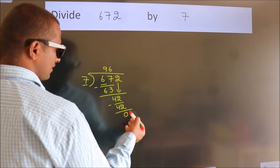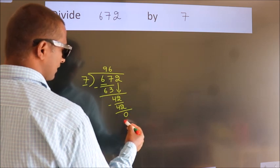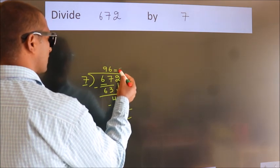After this, no more numbers to bring down. And we got remainder 0. So this is our quotient.